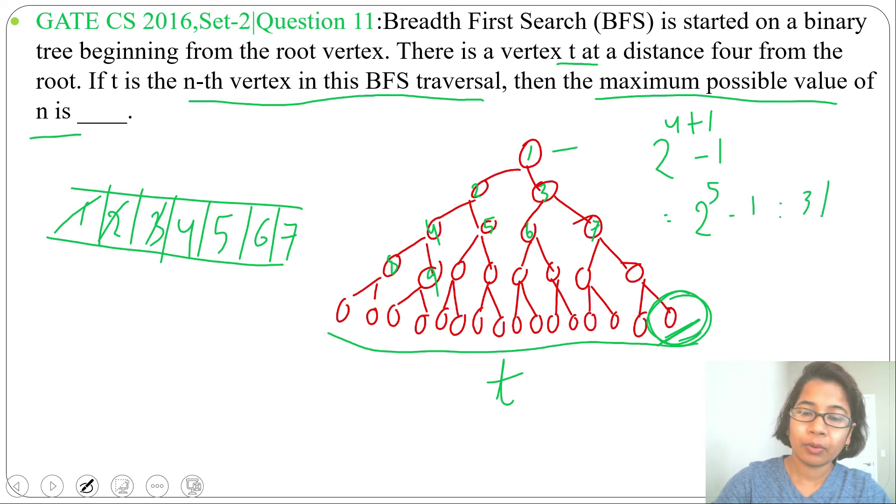Suppose we assign node names: here it is 9, 10, 11, 12, 13, 14, 15. The last level can start from 16 and end at 31.